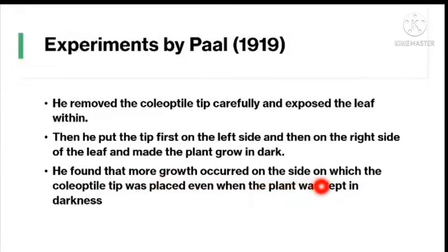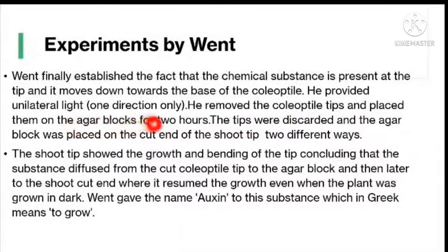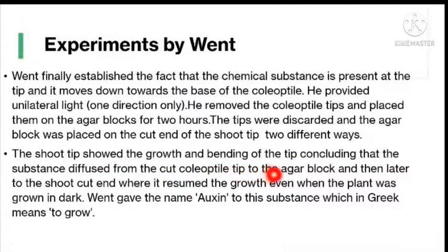Next, experiments by Went: Went finally established that a chemical substance is present at the tip and moves down towards the base of the coleoptyle. He provided unidirectional light, removed the coleoptyle tips, and placed them on agar blocks for two hours. The tips were discarded and the agar block was placed on the cut end of the shoot — the shoot showed growth and bending, confirming the substance diffused from the tip into the agar and then to the shoot. Went gave the name 'auxin' to this substance, which in Greek means 'to grow.'